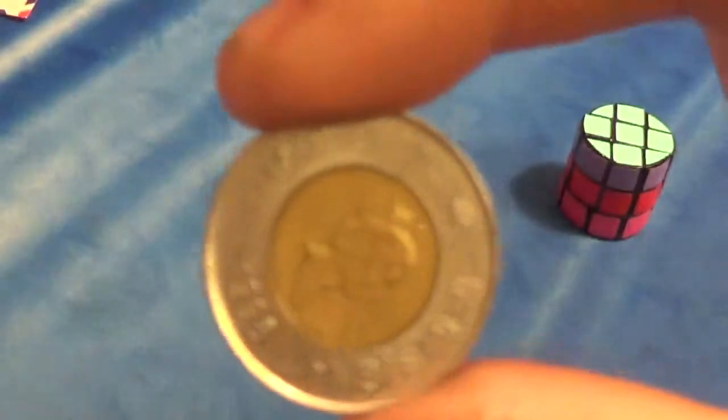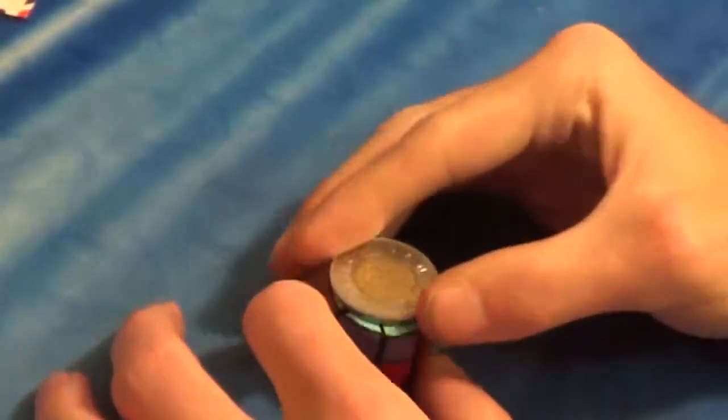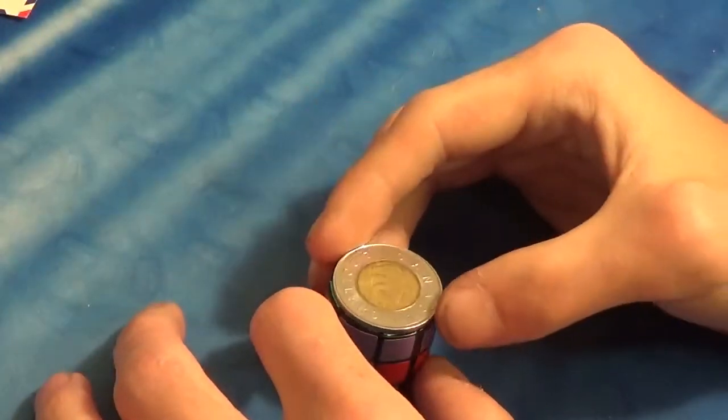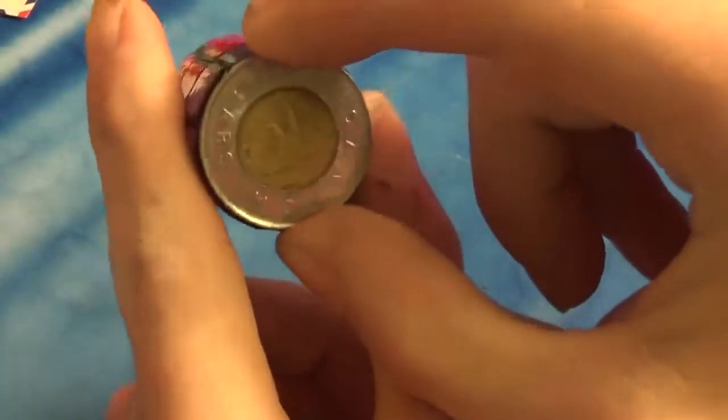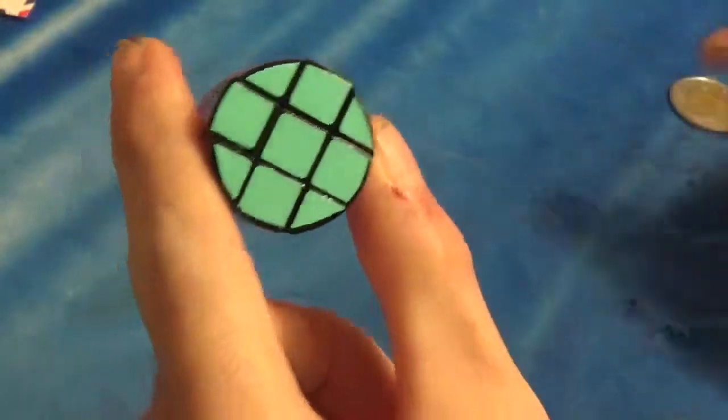I used one of these Canadian 2 dollar coins to use as a template because the Canadian 2 dollar coin is exactly the same diameter as the circle right here.